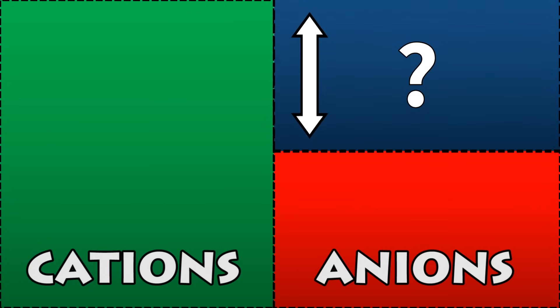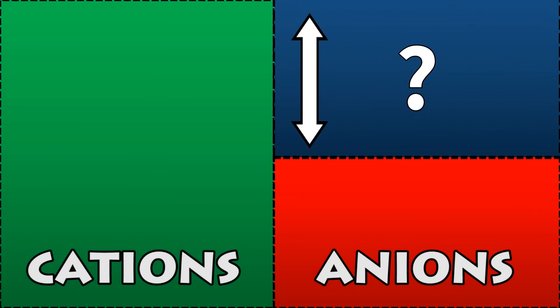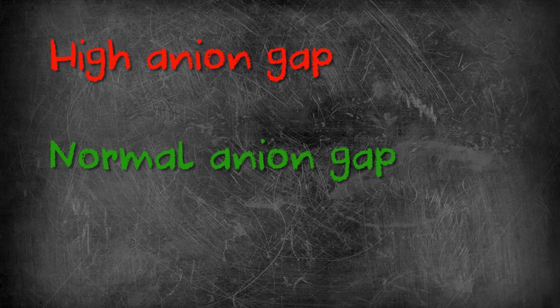So if the gap is high, remembering that serum is kept neutral, it means that these unmeasured anions account for a greater proportion of the serum's negative charge than usual. The next question is: why is this useful in acidosis? What's the point in calculating this anion gap? Well, acidosis can be classified as either high anion gap or normal anion gap, and this can be helpful in correctly identifying the cause of the acidosis.